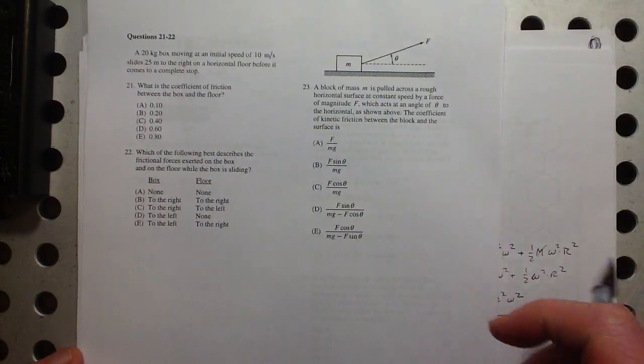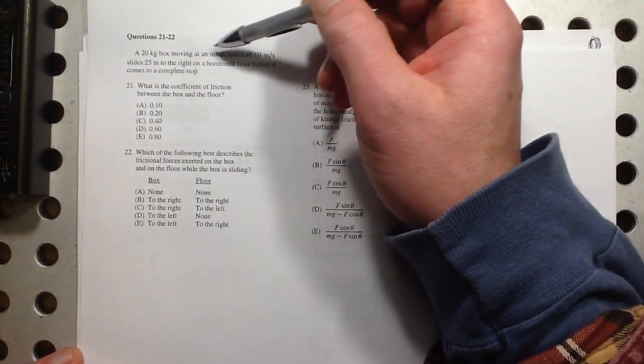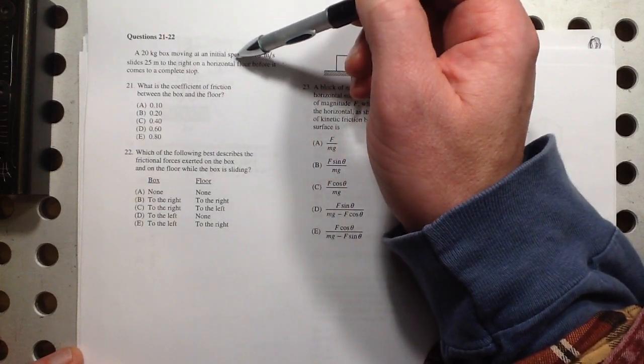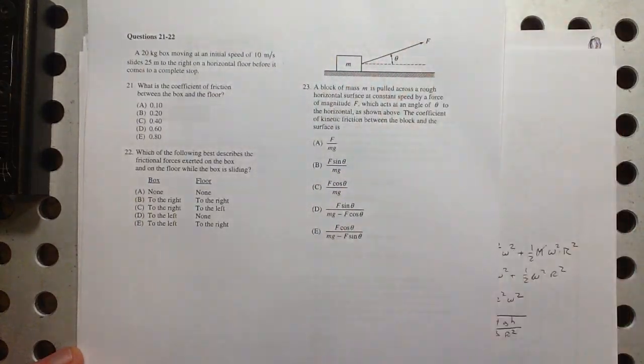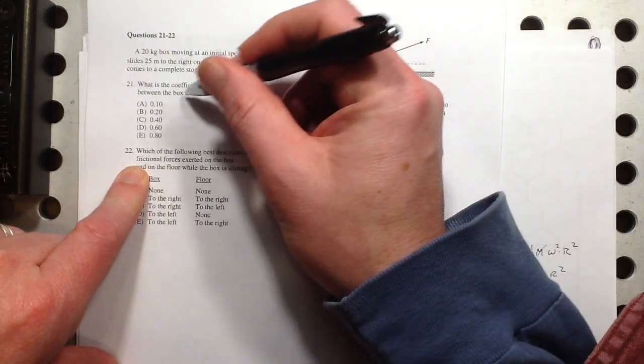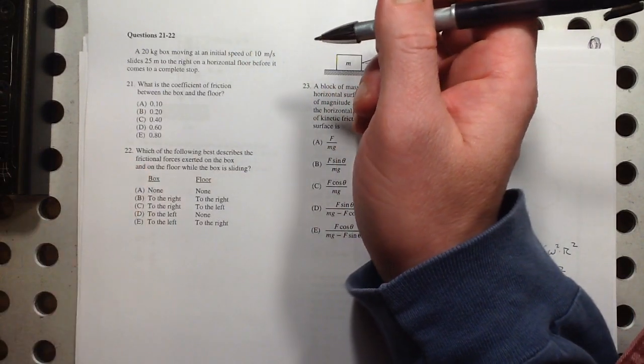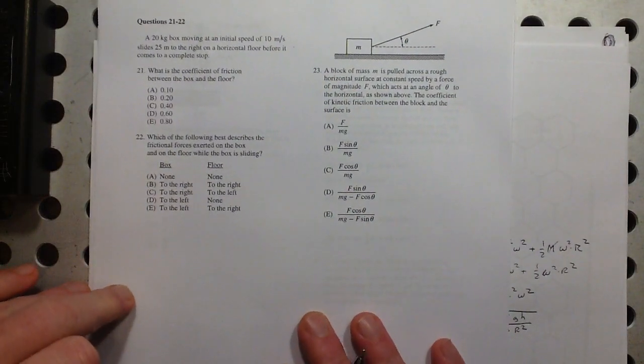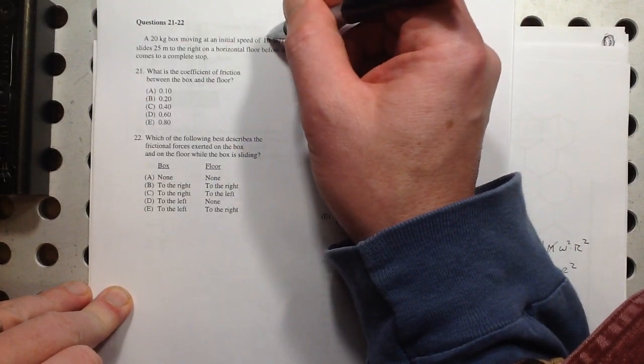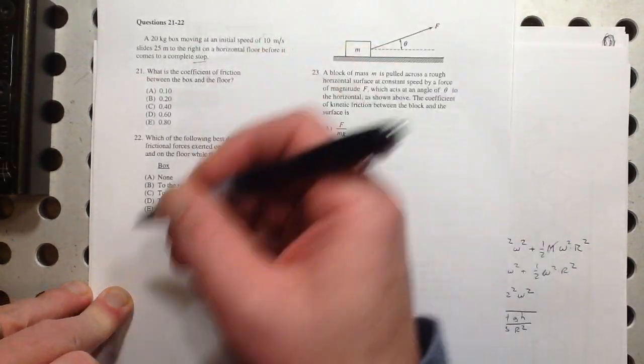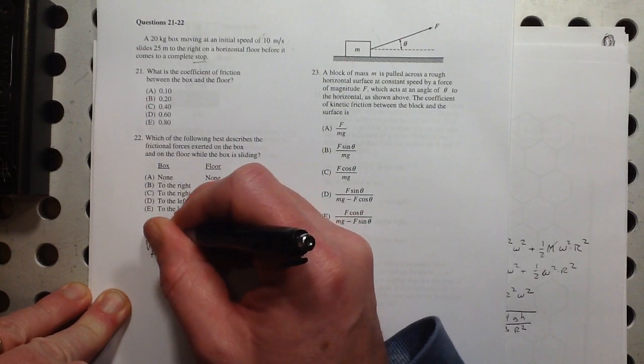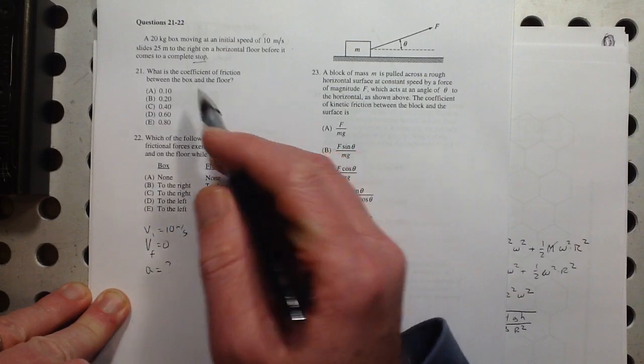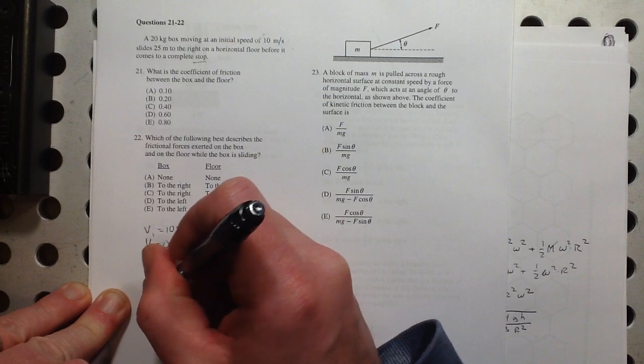Number 21. Looks like 21 and 22 both refer to this. A 20-kilogram box moving at an initial speed of 10 meters per second slides 25 meters to the right on a horizontal floor before it comes to a complete stop. What's the coefficient of friction between the box and the floor? There's a couple of ways to do this, I think. Let's do them both.